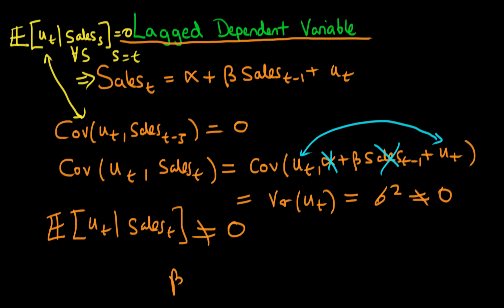So in these circumstances, beta hat ordinary least squares will actually in general not equal the true parameter beta. And in situations where beta is around 1, beta hat ordinary least squares will actually be downwardly biased.